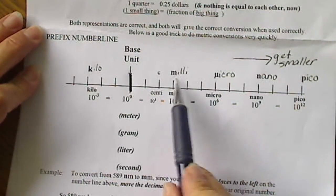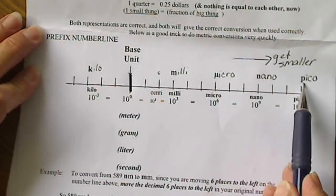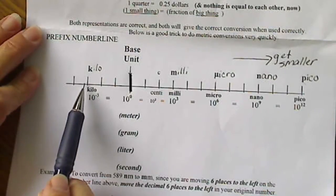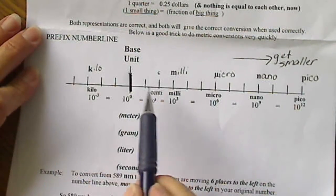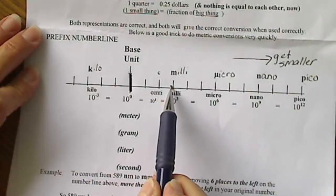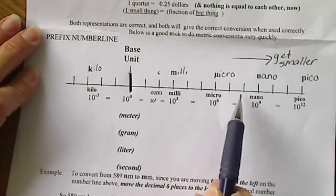And that should make sense to us if we memorize this order, which is milli, micro, nano, pico. And again, kilo is going to be on the other side. So there are three decimal places in between each one of these units.